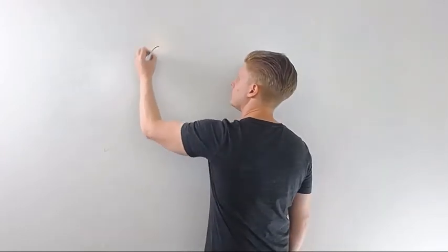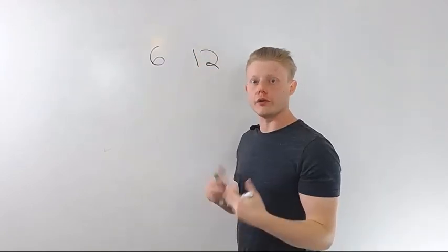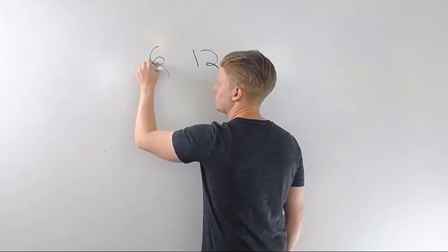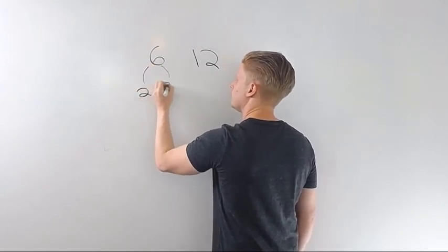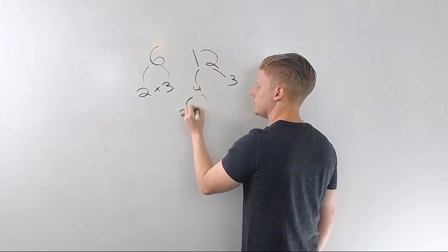Let's look at 6 and 12 again. You can probably eyeball this one, but let's run through the prime factors. So, 6 breaks into 2 times 3, 12 breaks into 3, 4, then that breaks into 2 and 2.